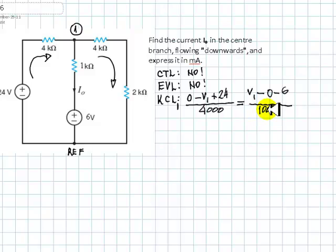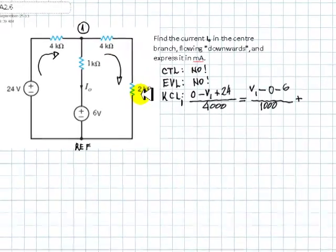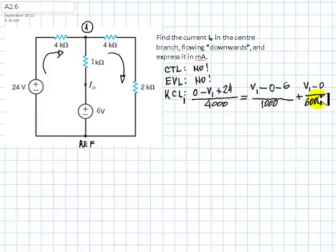Plus the other current — the current in the R branch — which is the voltage of the origin V1, minus the voltage of the destination (Vref = 0), divided by the total resistance of the branch: 4k in series with 2k, which is 6,000 ohms. So that term is V1 minus 0, divided by 6,000 ohms.